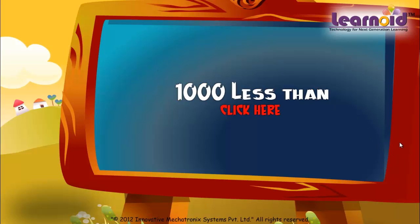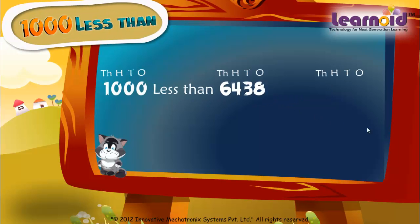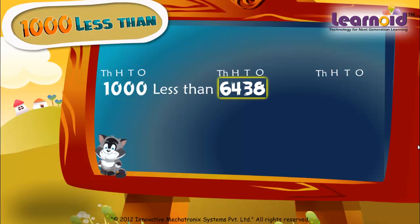Today we will learn how to find a number which is one thousand less than a given number. We have to find one thousand less than six thousand four hundred thirty-eight.